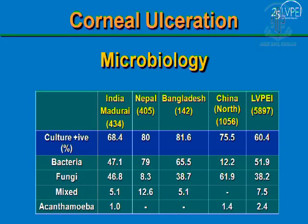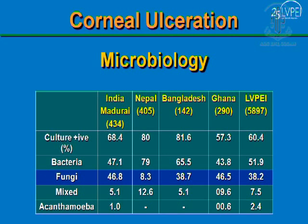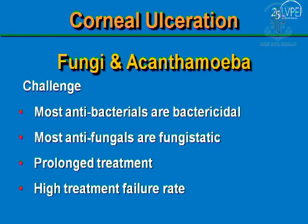The microbiology also makes management of corneal ulcer challenging in our country. Among corneal ulcers, nearly 50% of cases are caused by fungi. The proportion caused by acanthamoeba is also relatively higher compared to the Western world, accounting for 1–2% of cases. Fungi and acanthamoeba are particularly challenging because, in contrast to most antibacterials which are bactericidal, antifungal agents are fungistatic. They require prolonged treatment, and there is a high treatment failure rate for both fungi and acanthamoeba.